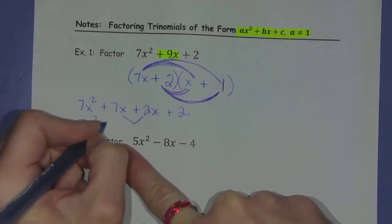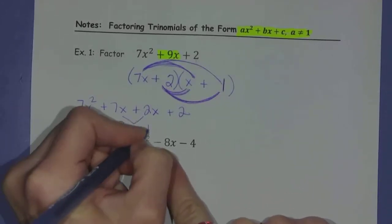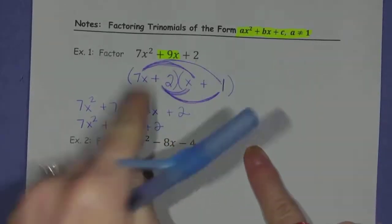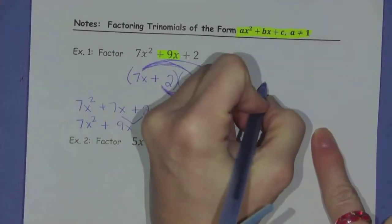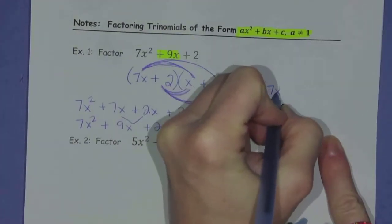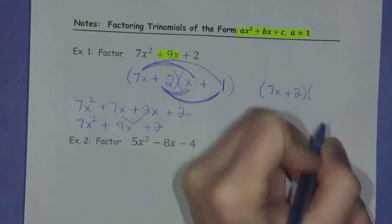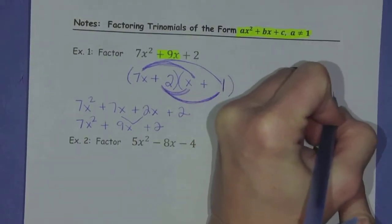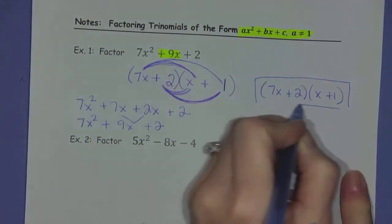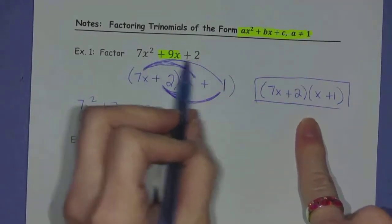So 7x squared plus 9x plus 2 is what I started with. That's how I know I did this correctly. So my final answer, I'm going to write it without all these markings, would just be 7x plus 2 times x plus 1. This is the factored version of this polynomial.